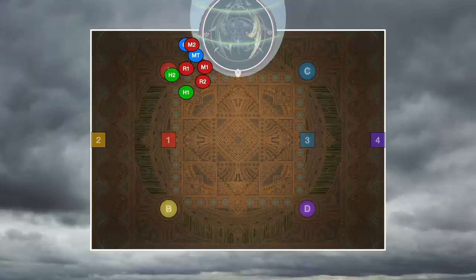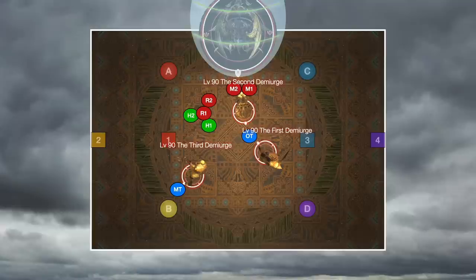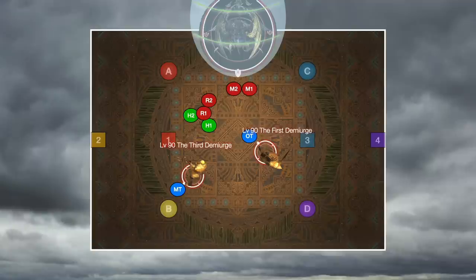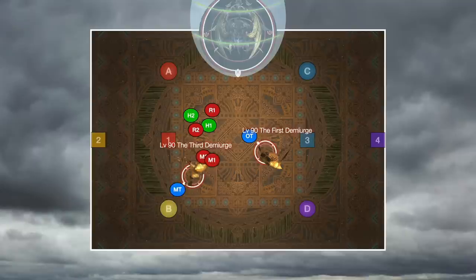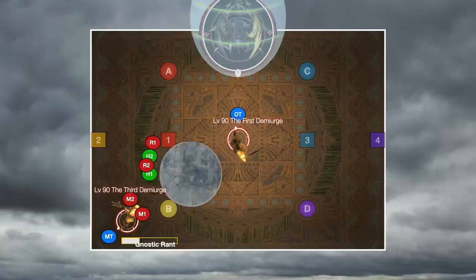To break through how the entire add phase works chronologically: first, immediately have your main tank grab the third Demiurge while off-tank takes aggro on the second and first. Make sure your main tank's facing the third away, just in case Gnostic Rant goes off sooner than you're expecting. Target the second Demiurge and dodge the Gaze attack when it happens. Hopefully kill the second Demiurge shortly afterwards. Immediately start DPSing down the third. Watch out for Ring of Pain. Pull the boss to that corner. Watch out for when Gnostic Rant gets cast. Be aware, there's a possibility that the tank will not have the opportunity to face him to the corner, so everyone should be watching for this cast to dodge to the rear of the add whenever it goes off.